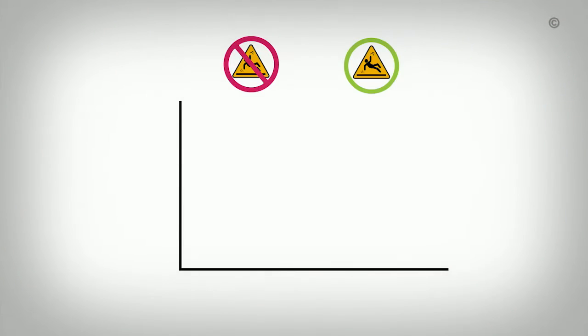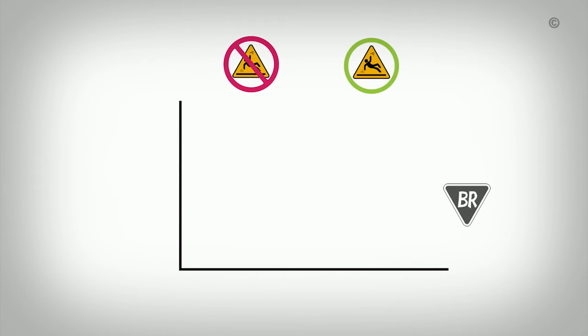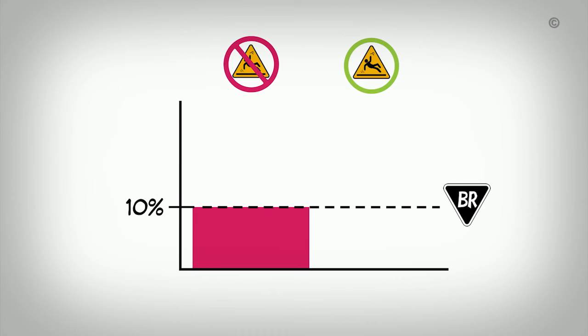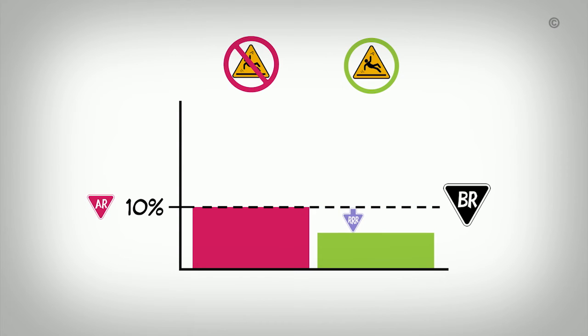So far, we've considered a situation where the baseline risk for a fracture is 30%. But what happens if the baseline risk is lower? Let's say another study is conducted where the baseline risk for a fracture is only 10%, meaning the absolute risk for a fracture in the control group is also 10%. If the groups are randomly allocated, we can assume that the baseline risk in the intervention group is also about 10%. Let's assume the intervention has the same effect, so the relative risk reduction is 40%.